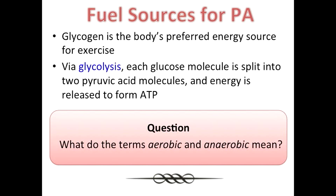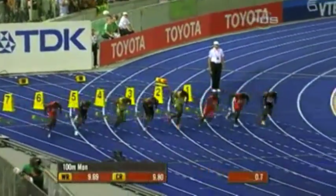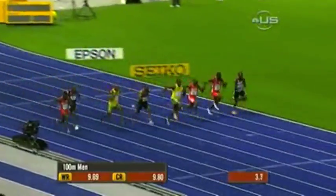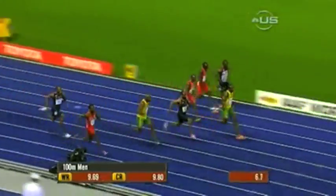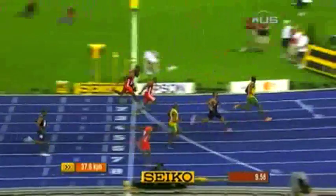Now for a quick question: what do the terms aerobic and anaerobic mean? You'll have the time it takes for Usain Bolt to run 100 metres to figure it out. Did you figure it out in time? Aerobic means with oxygen, and anaerobic means without.